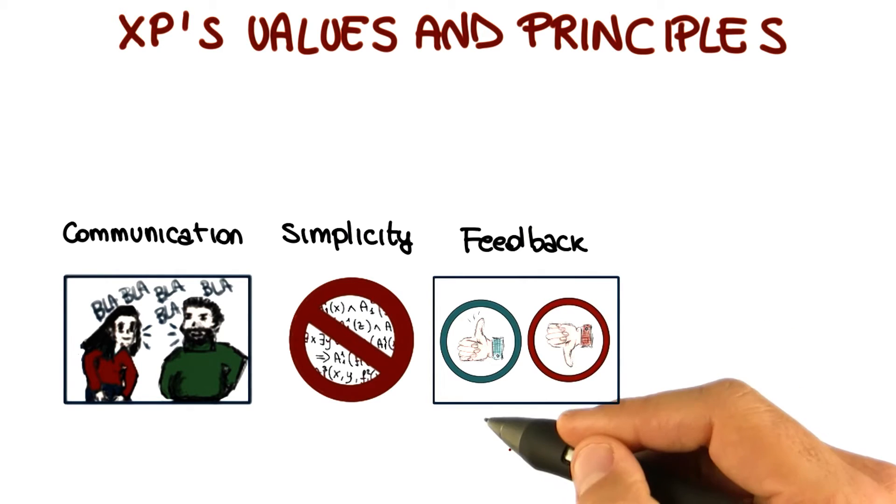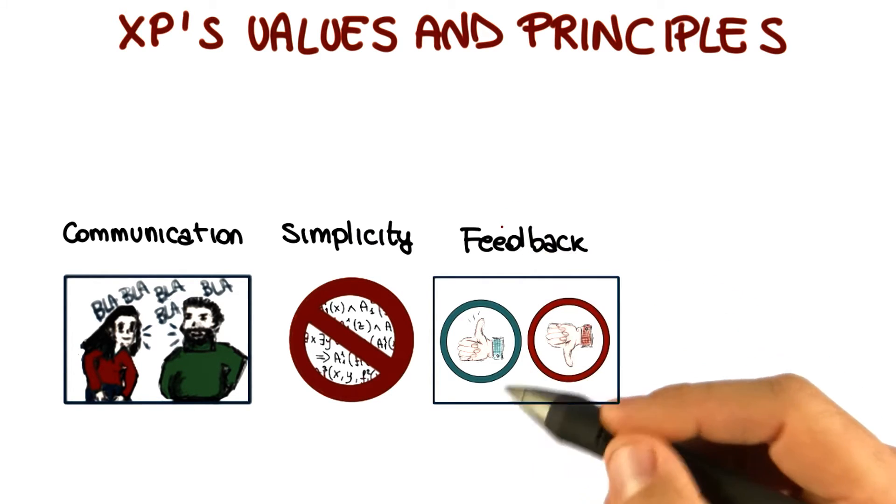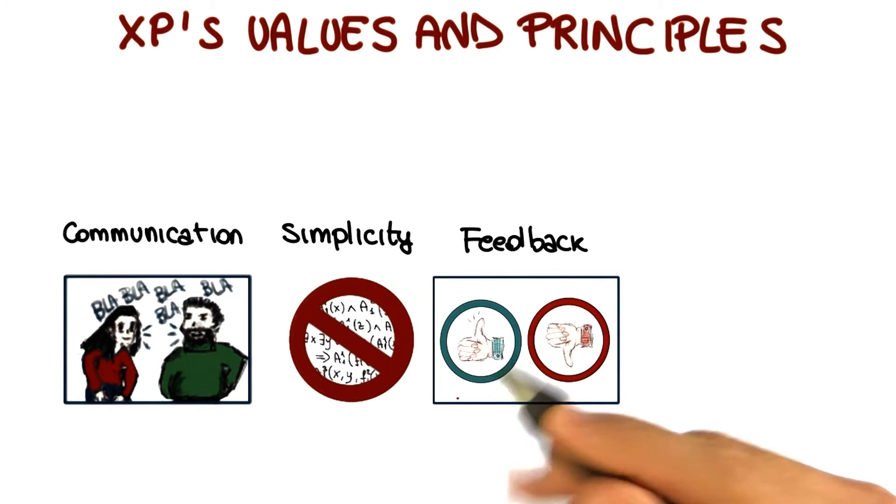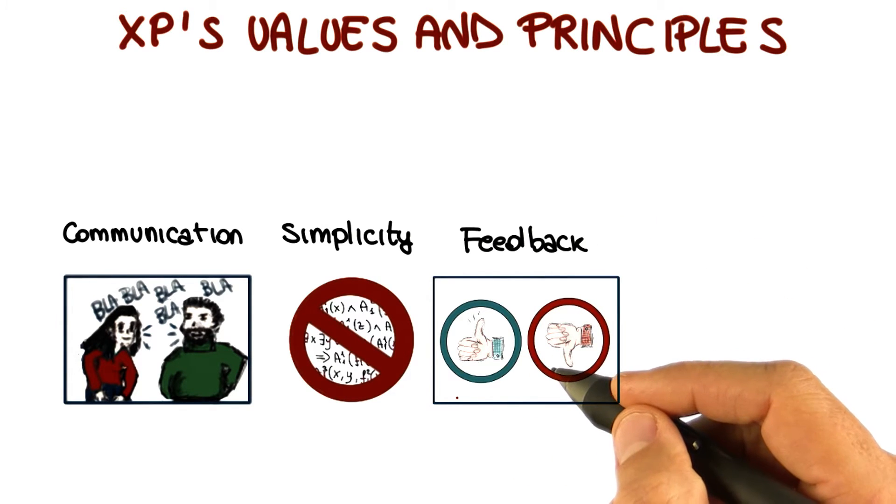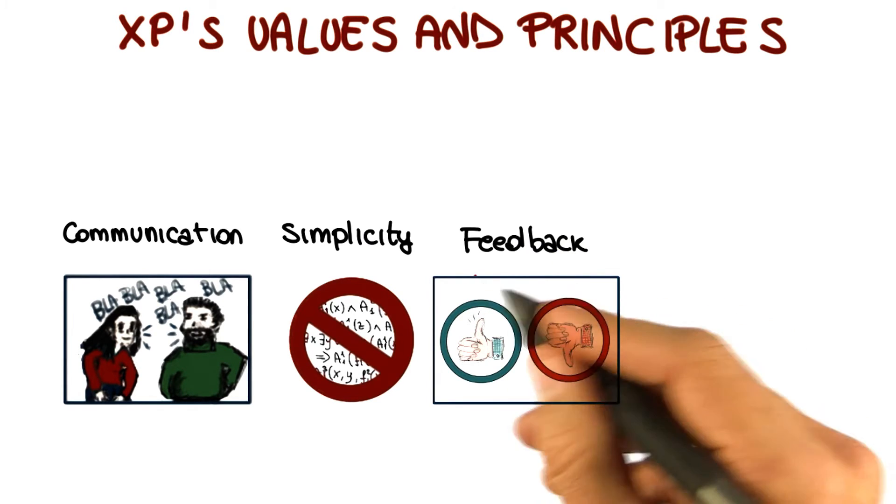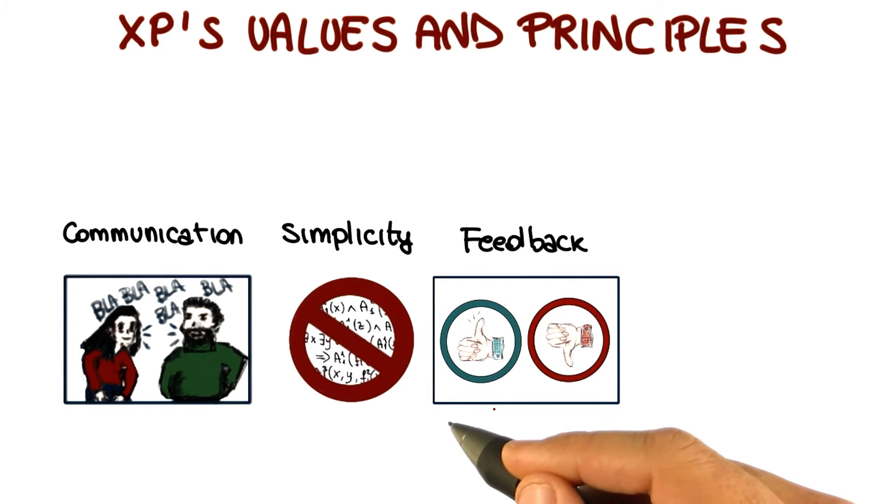Developers also estimate new stories right away, as soon as they get them from the customer, and that's immediate feedback to the customer. And finally, on a slightly longer time frame, customers and testers develop together functional system test cases to assess the overall system. And also in this case, that's a great way to provide feedback, and by the way, also to help communication.